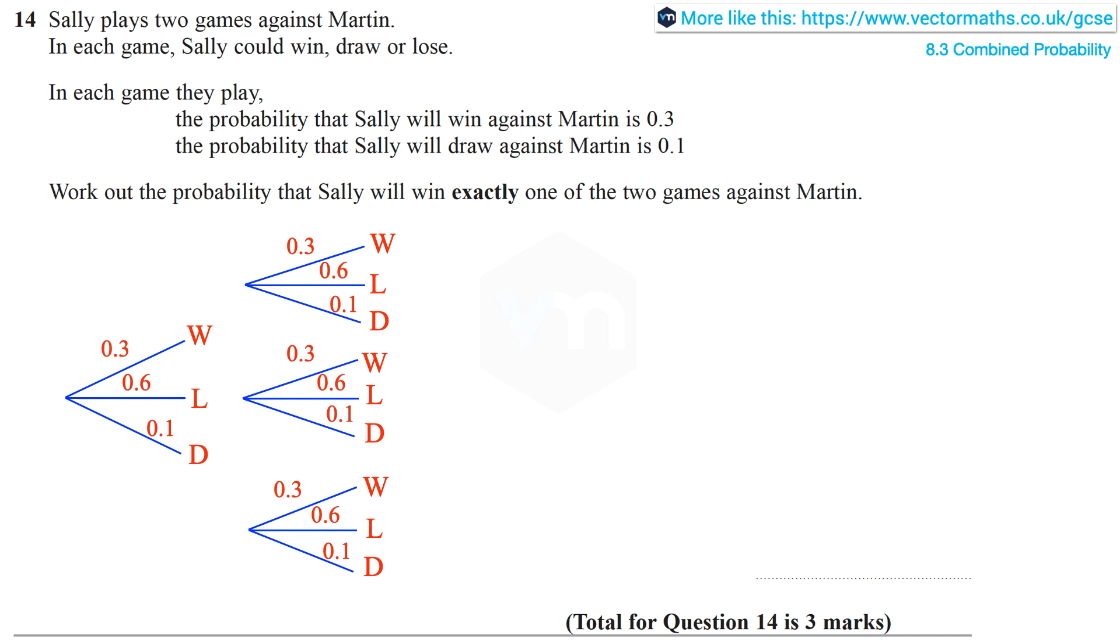Now we are interested in certain events. The probability that Sally wins then loses is 0.6 times 0.3, which equals 0.18. That she wins then draws is 0.03, and that she loses then wins is also 0.18.